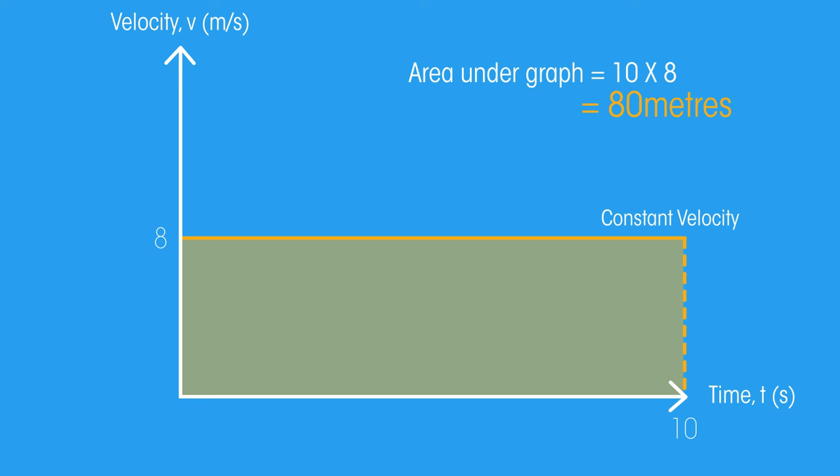Look at the unit, 80 metres. The area underneath the graph gives us the total distance that the object has travelled. So we have velocity, time and distance.